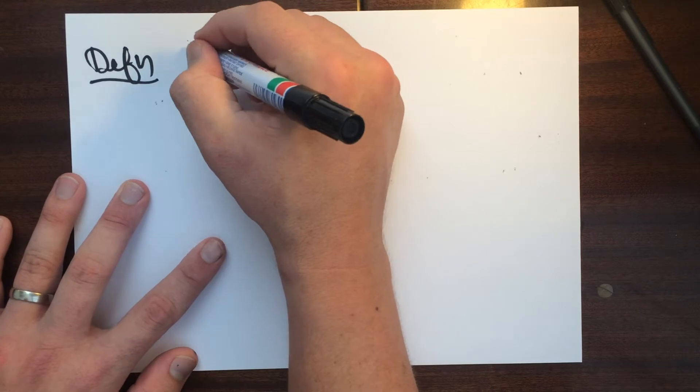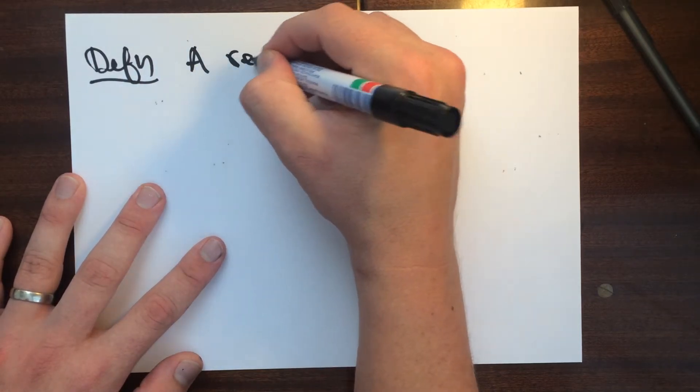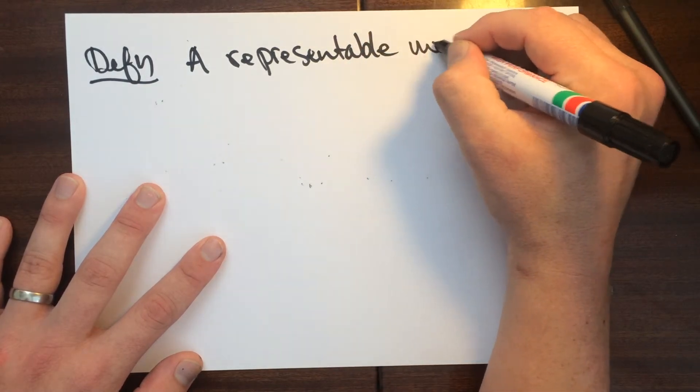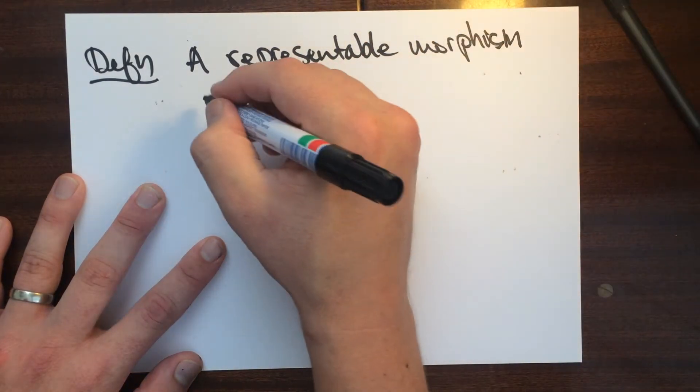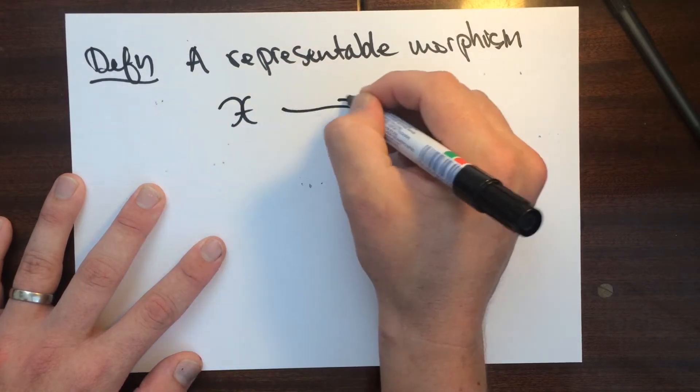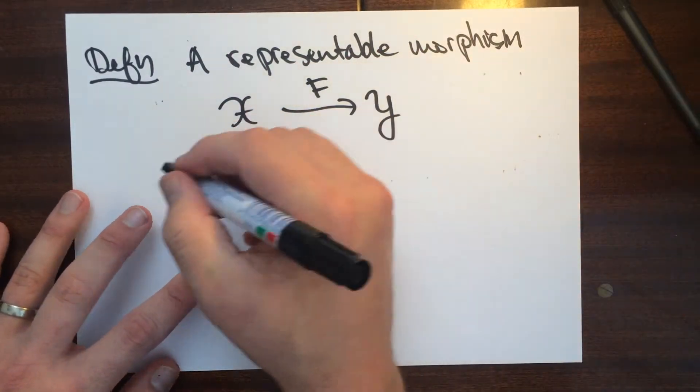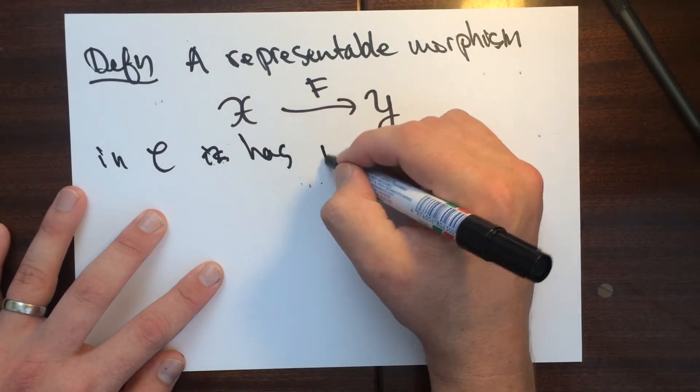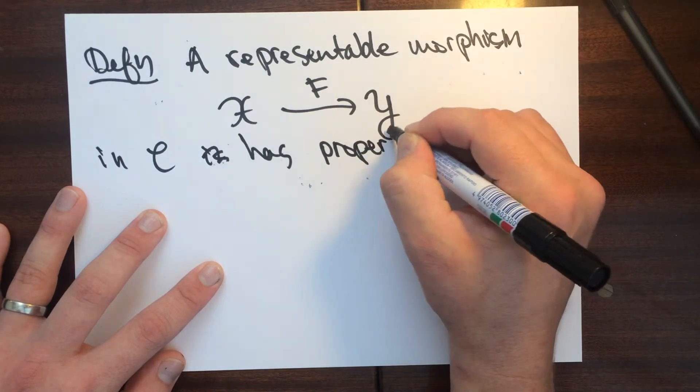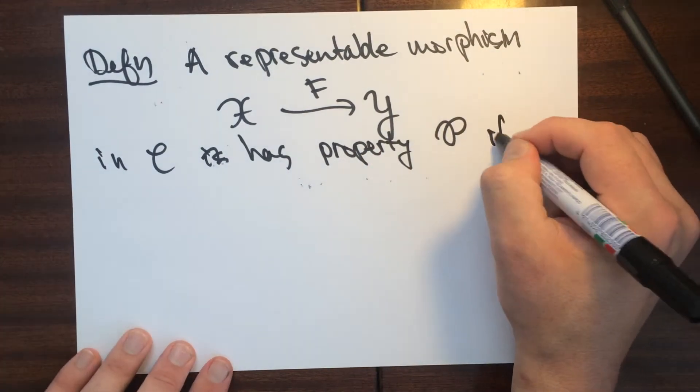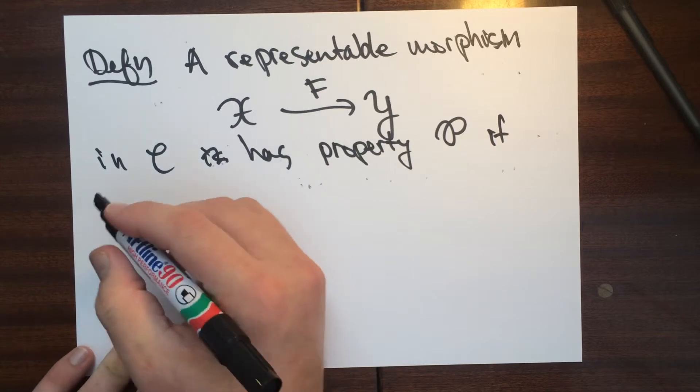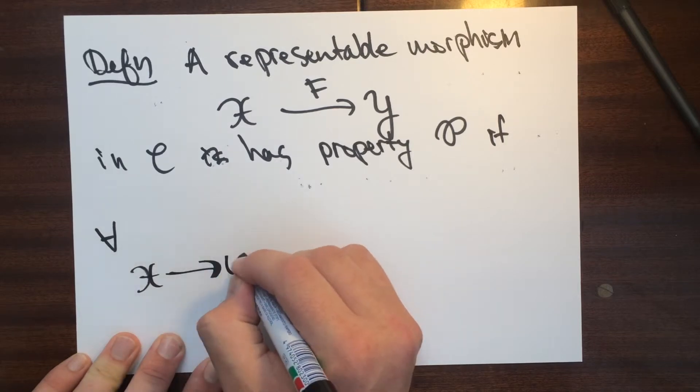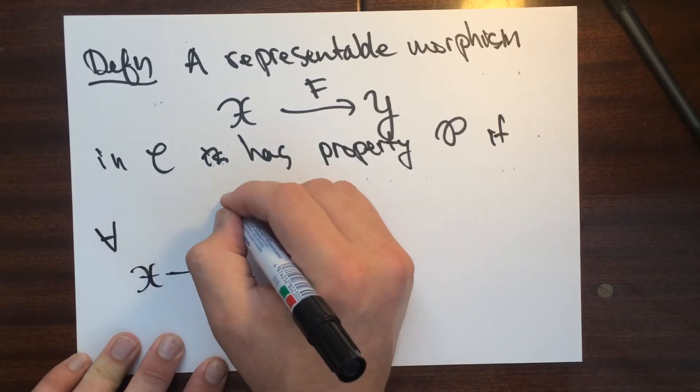A morphism, so a representable morphism f, so in C, it has property P if, so for every one of these guys Y, and then we take U here, so we do this situation here, where we take a geometric object, right?